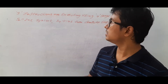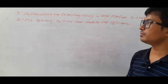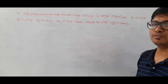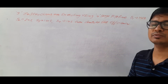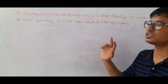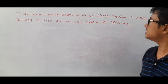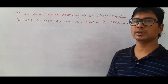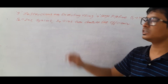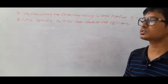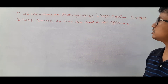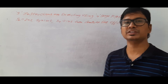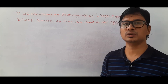The question is: three instructions — instruction one, instruction two, instruction three — are executing using a four-stage pipeline: stage one, stage two, stage three, stage four. Stage one is taking one nanosecond, stage two is taking two nanoseconds, and stage three and stage four are each taking one nanosecond. They are asking us to compute the efficiency.